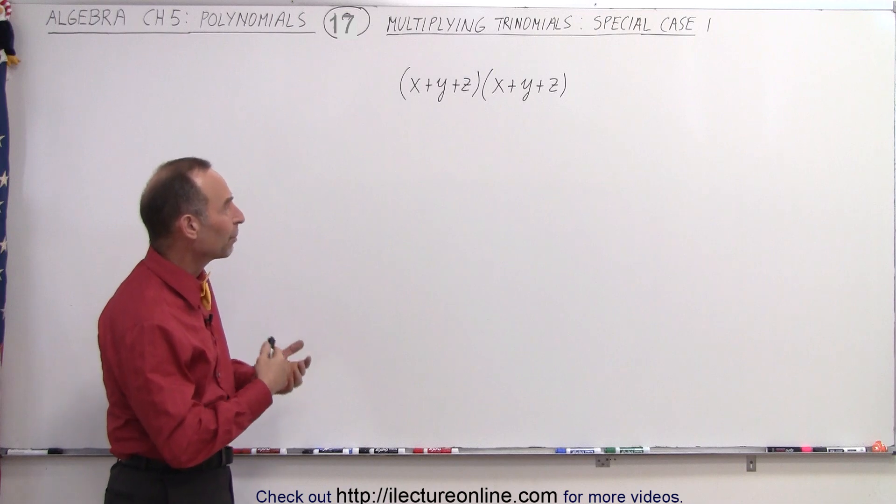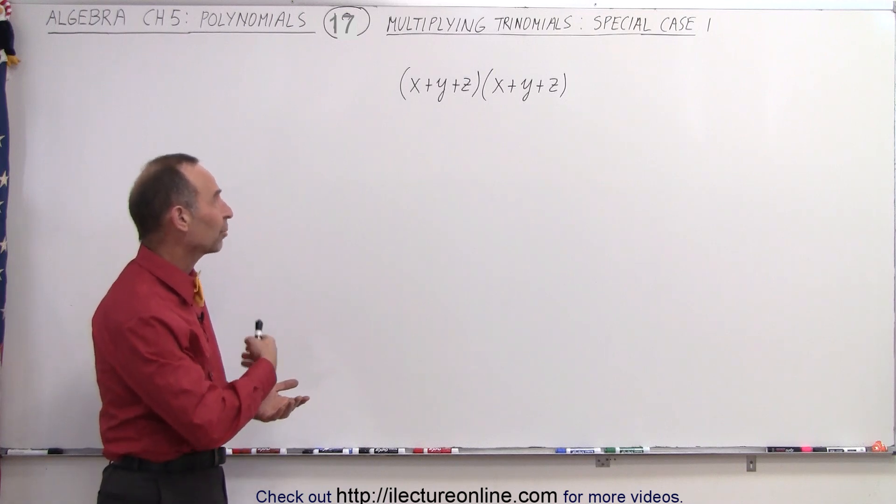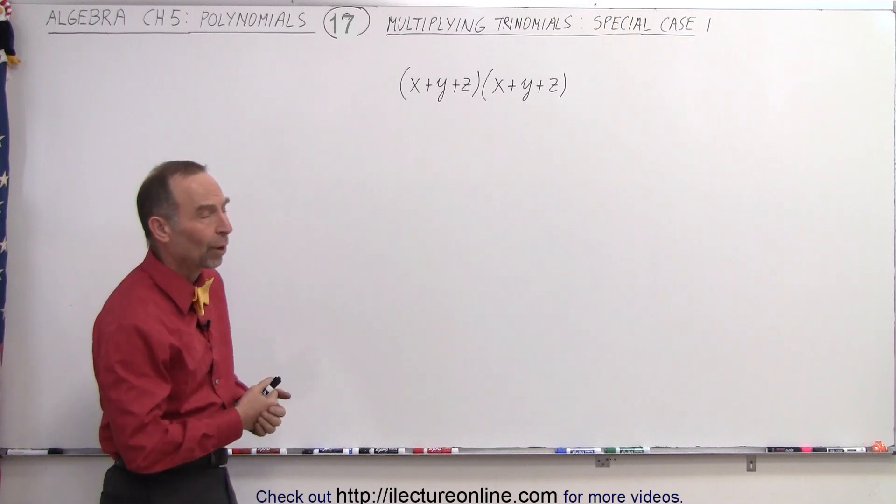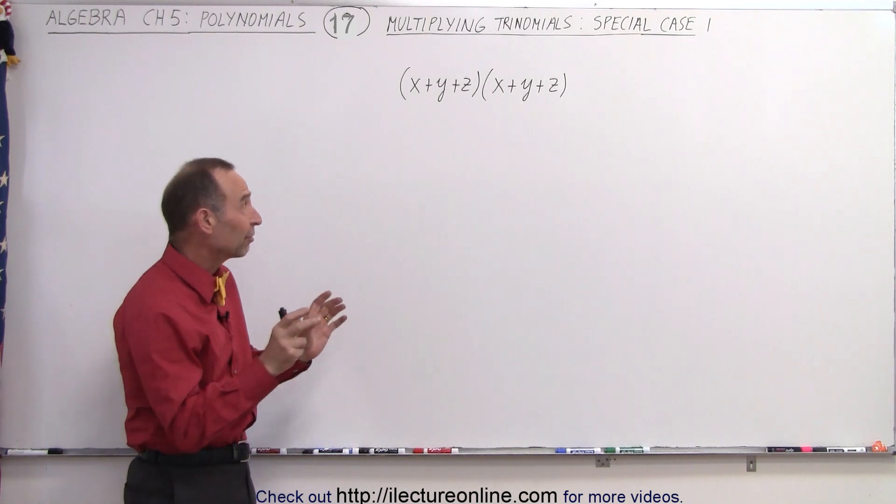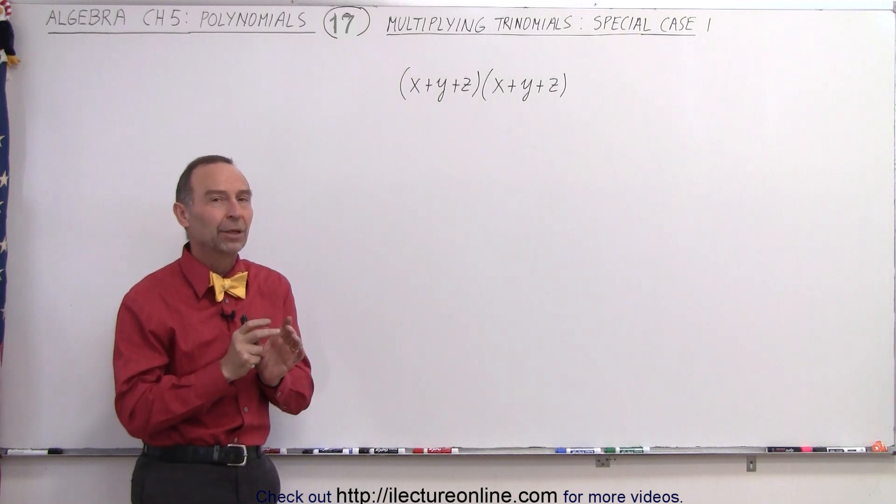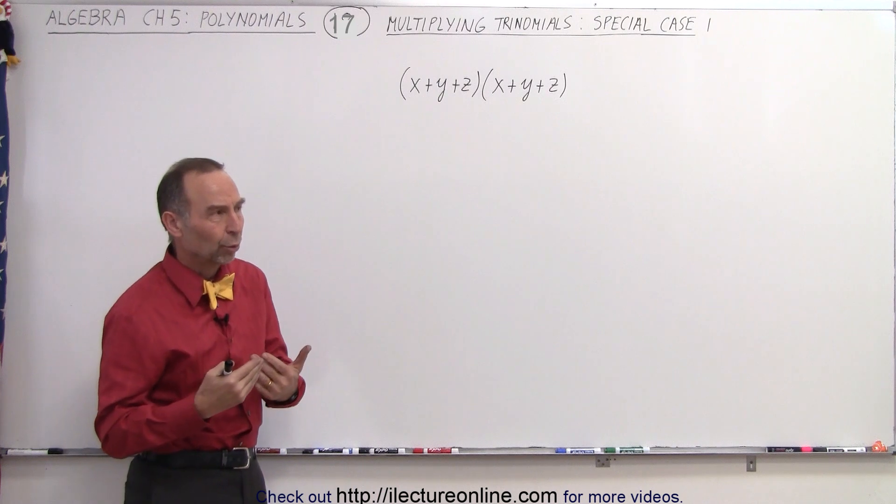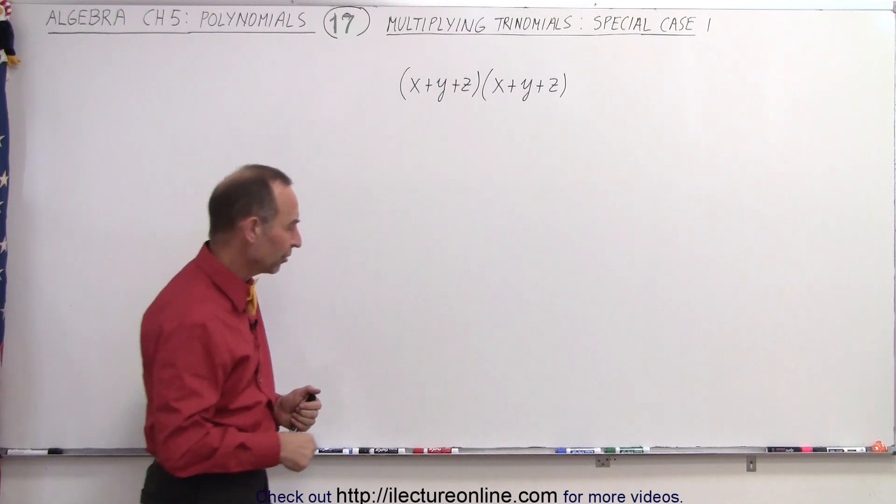So (x+y+z) squared, which is (x+y+z) times (x+y+z). Since each trinomial has three terms and we'll multiply them, we should have nine products as a result of that.